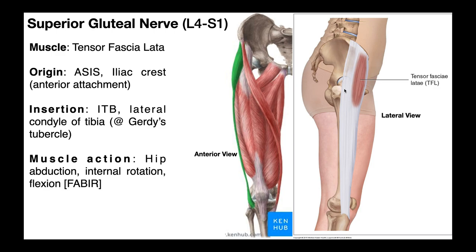This muscle also plays a role in stabilizing the knee joint when the knee is in full extension or a little bit of knee flexion. Basically when you're walking, running, or landing on that particular leg, the tensor fascia latae contracts and puts tension on the IT band, which puts tension on Gerdy's tubercle. That draws the tibia a little bit more snugly to the femoral condyles where the tibia articulates with the femur, thereby stabilizing the knee joint — approximating the femur and tibia a little more tightly so your knees don't buckle.